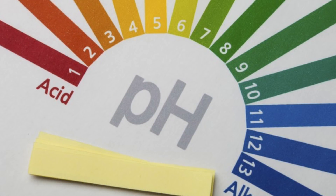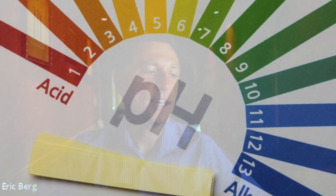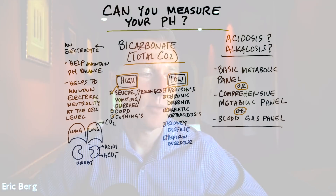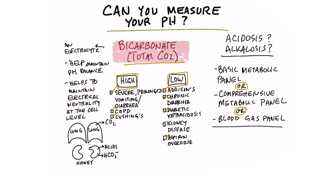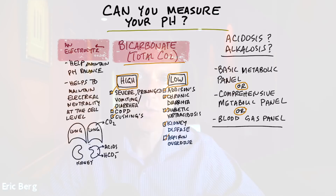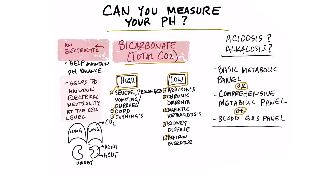But there is another indicator that you can look at to get a rough idea of what your pH is, and that is to check your bicarbonates. Bicarbonates are an alkaline substance and are actually considered one of the electrolytes, which is interesting because they work with other electrolytes like sodium, chloride, and potassium to help maintain electrical neutrality in your cells — in other words, they help to buffer the pH.